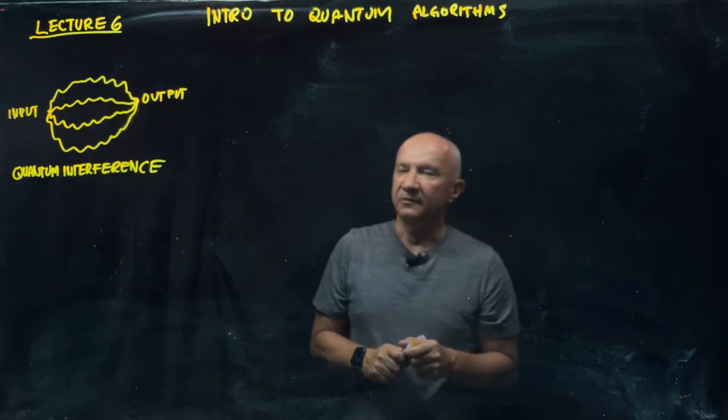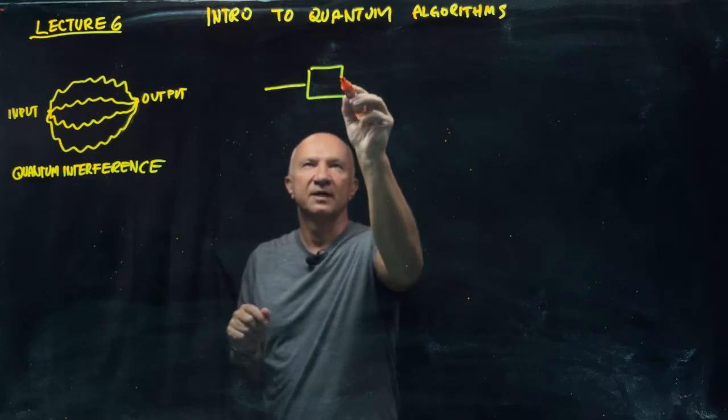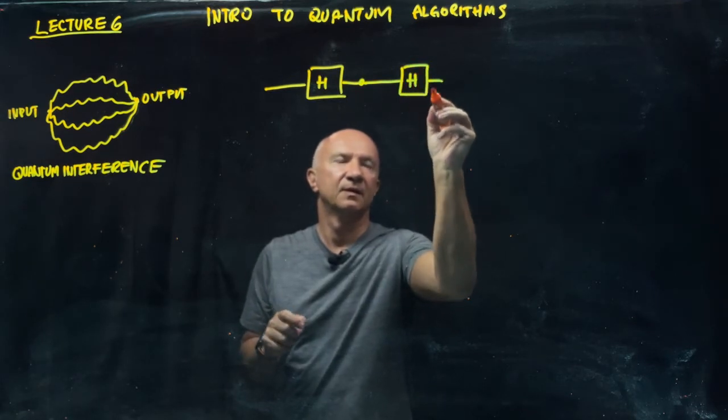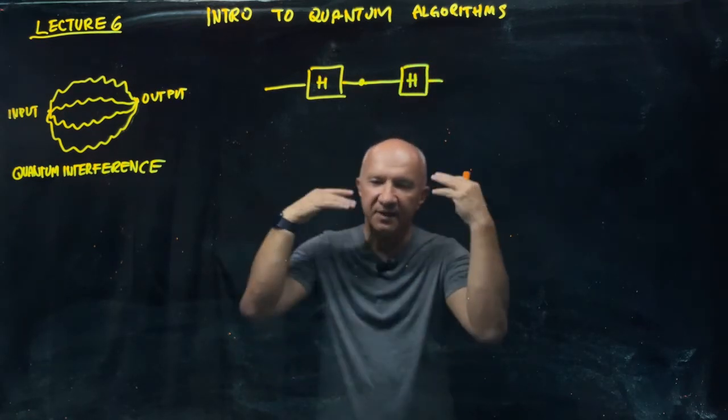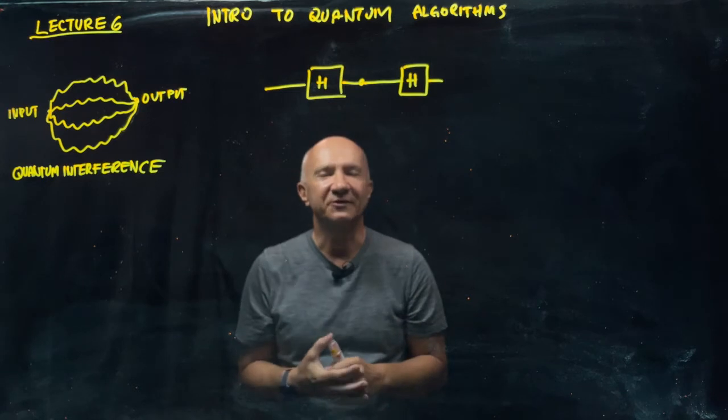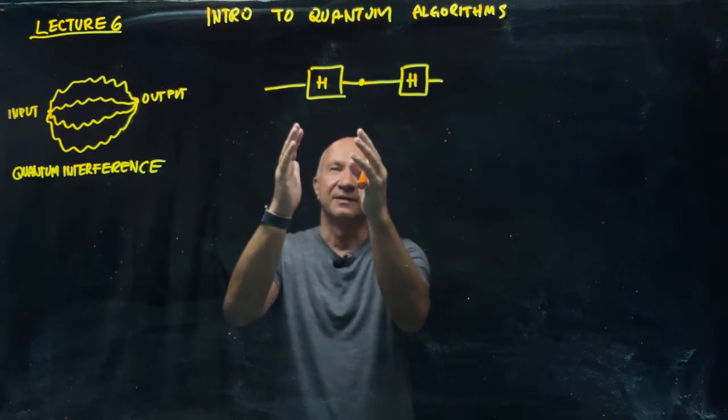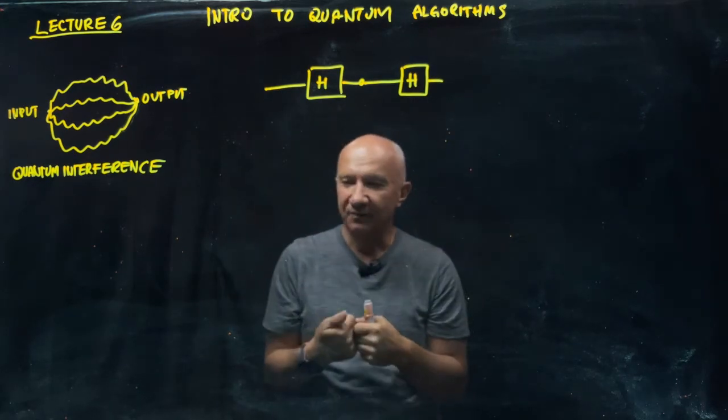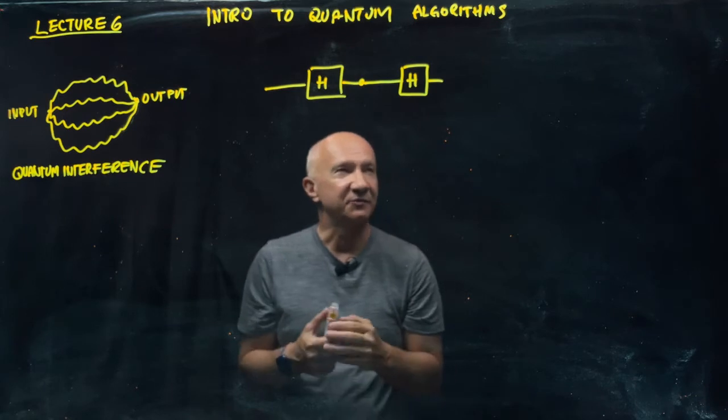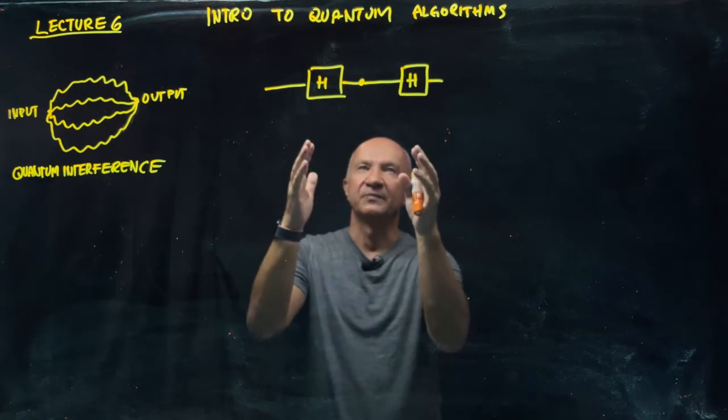So you do remember the golden sequence for quantum interference, at least at the single qubit level. That was the sequence Hadamard phase gate Hadamard. And the reason I was so obsessed about this sequence, it's not only that it's just a canonical sequence for single qubit quantum interference, and I wanted you to simply understand it, that it represents a generic interference on a single qubit. But the real reason I was so enthusiastic about it was simply because I want to now show you that the quantum algorithm that we are going to discuss will actually follow this pattern.